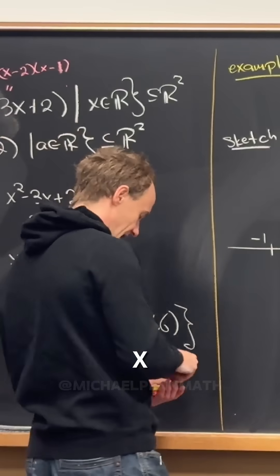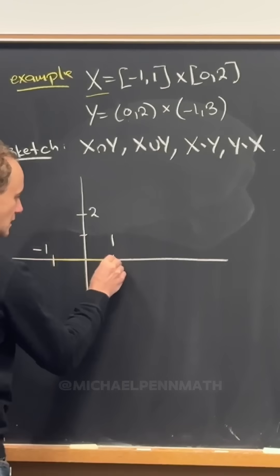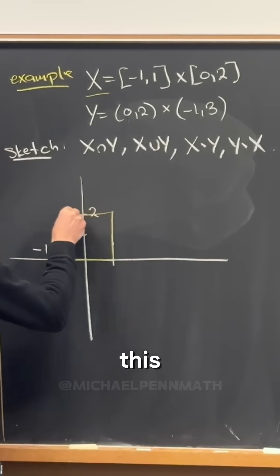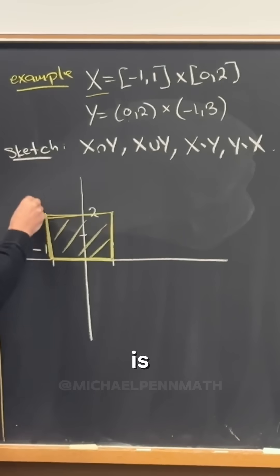So let's see, X is going to be this closed rectangle right here. So this is our set X. Because notice the first coordinates take on the value from minus one to one, and the second coordinates take on the value from zero to two.